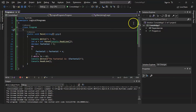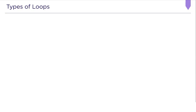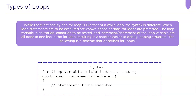The next type of loop is the for loop. While the functionality of a for loop is like that of a while loop, the syntax is a little different. For loops are preferred when loop statements to be executed are known ahead of time. The loop variable initialization, condition to be tested, and increment or decrement are all done in one line, resulting in a shorter, easier-to-debug looping structure. The syntax includes: loop initialization, test condition, increment or decrement, and statements to be executed.